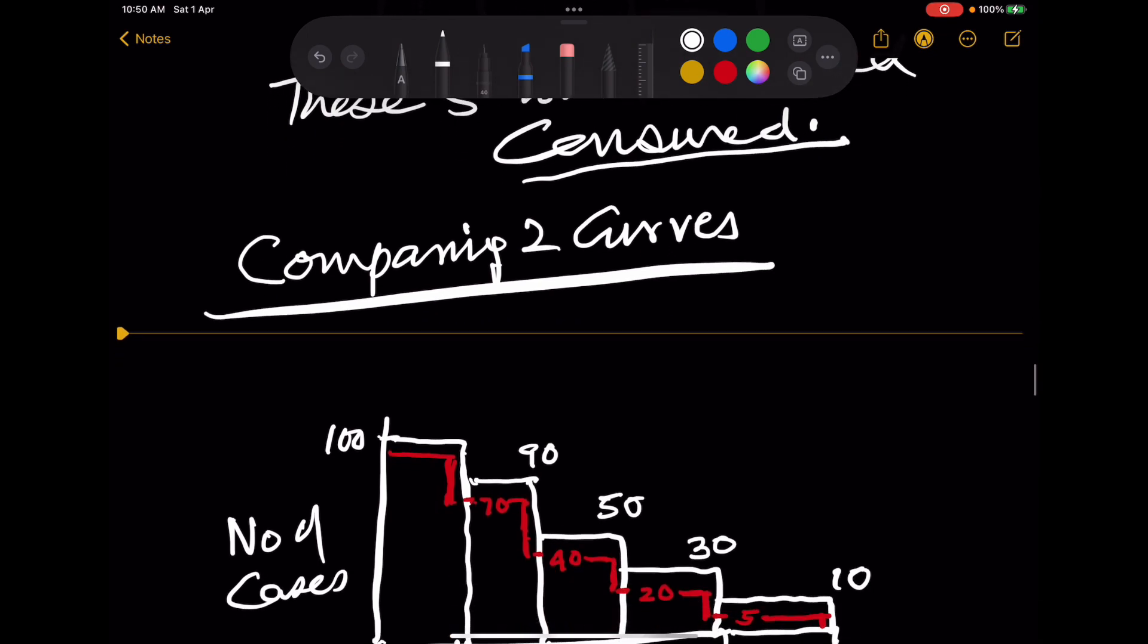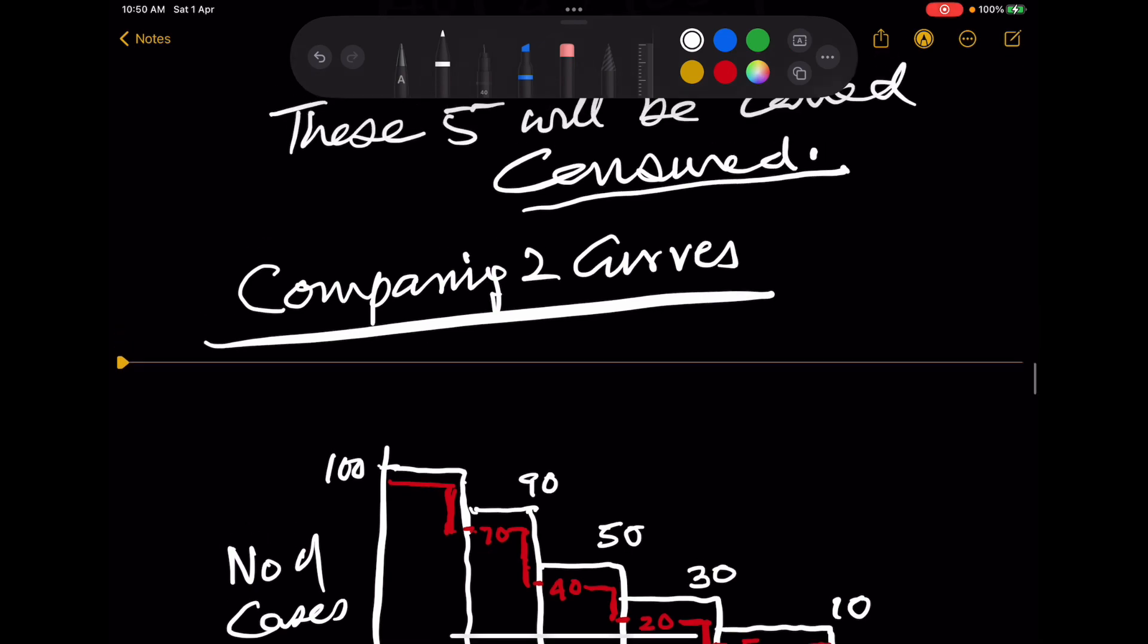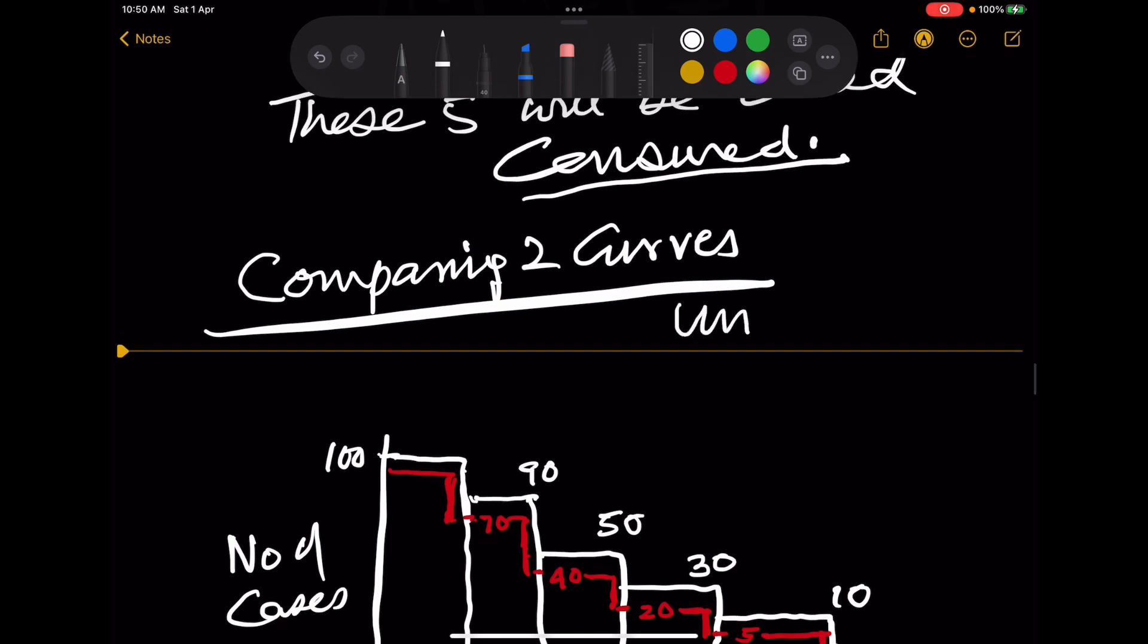Now let us start comparing two curves. Supposing you are saying whether male survived more or female survived more, so you are trying to relate one variable to survival. This is called univariate analysis.